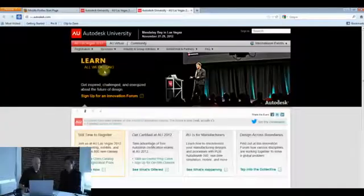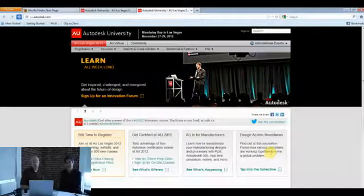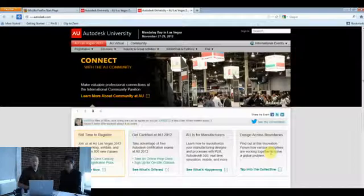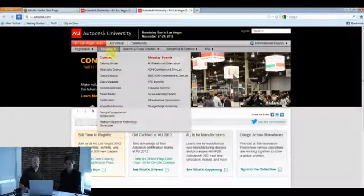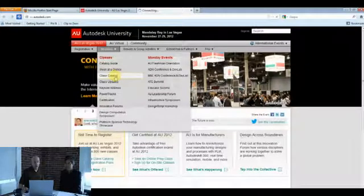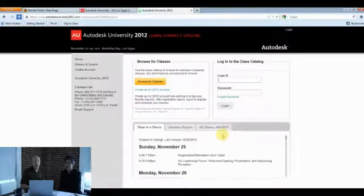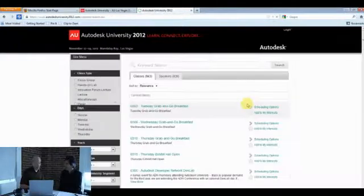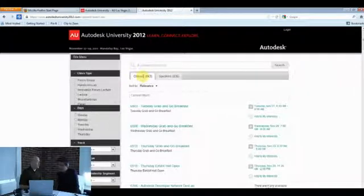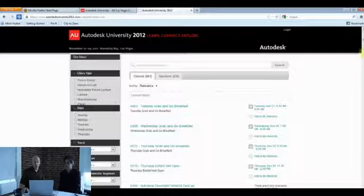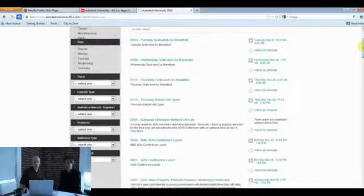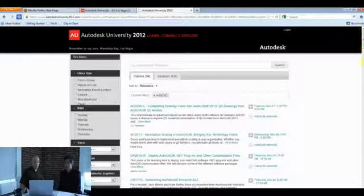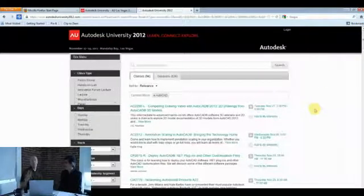This is the Autodesk University site. You just go there and explore around au.autodesk.com. I'm going to talk a little bit about the classes. So if you come up to the sessions tab here and go to the class catalog you can see all the classes that we are going to have at this event and there's a lot of them. I'm going to browse for classes. I think there's over 800 classes this year. 843 classes and 836 speakers. That's a lot of classes.